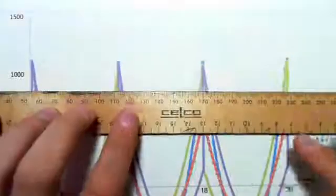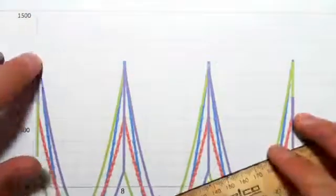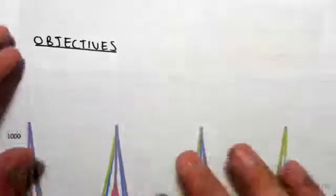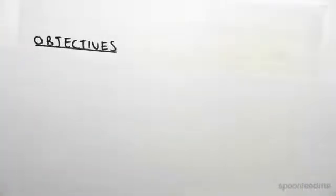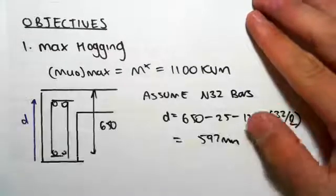We just take our ruler and see roughly what value it is, so it's around this line here, which is at 1100 kilonewton meters. So our design bending moment, our M_u max, is 1100 kilonewton meters.